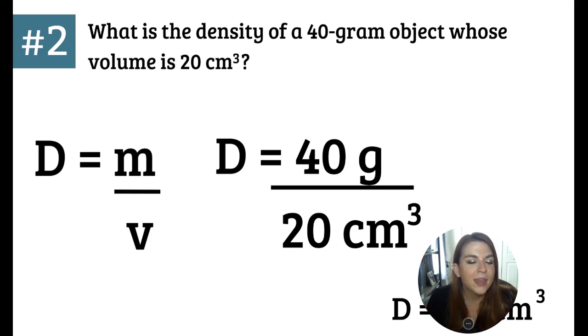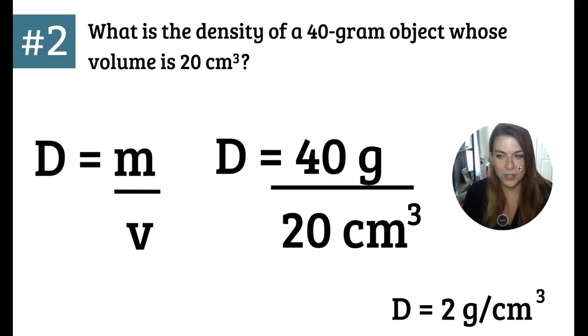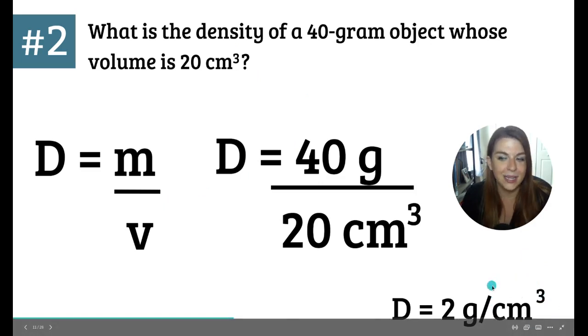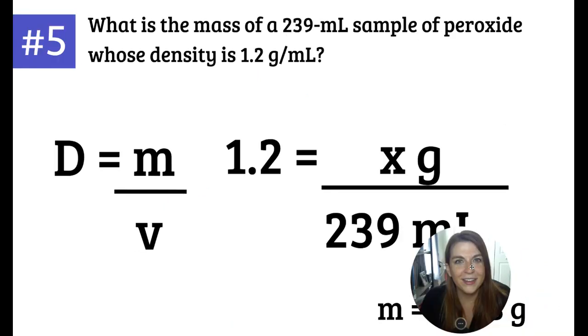Pause and solve this practice problem. It asks, what is the density of a 40 gram object whose volume is 20 cubic centimeters? Again, I like to write the equation just to help keep everything straight. I'm going to plug in 40 grams for the mass and 20 cubic centimeters for the volume. Make sure to divide those two numbers. And I am going to account for significant figures. I am left with two grams per cubic centimeter. And that is my density. Because my volume is given in cubic centimeters, I'm going to report my density in grams per cubic centimeters as well.